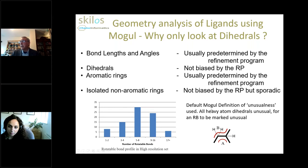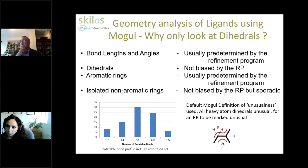I want to highlight something Robin also talked about: the current implementation of Mogul treats a rotatable bond as being made up of heavy atom dihedrals. In the example at the bottom, this rotatable bond in the center is made up of two heavy atom dihedrals. I'm defining a rotatable bond as having unusual geometry if all the dihedrals making up that bond are marked unusual. It's important to have a consistent method, and that's the method I'm using. The rotatable bond profile for the high resolution set shows quite a range — some structures have many heavy atom rotatable bonds.